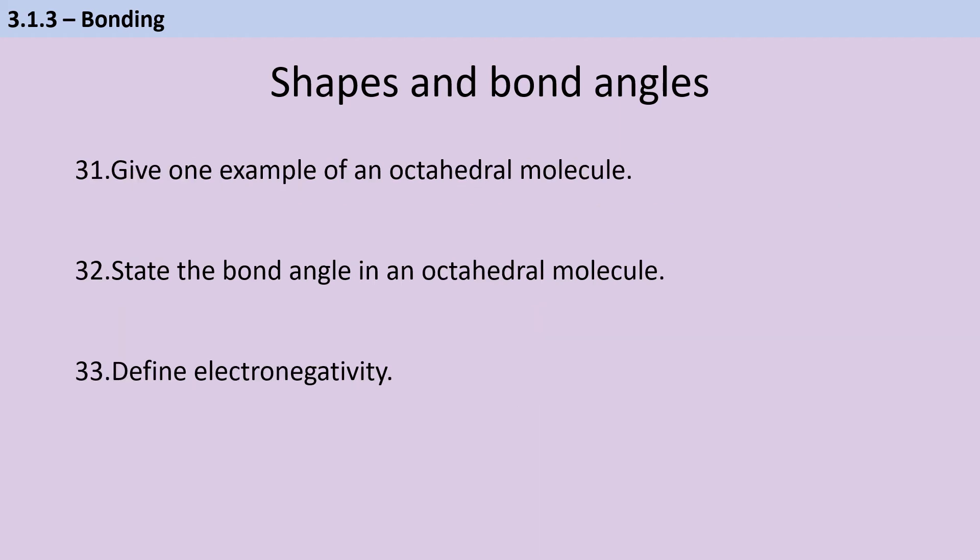There aren't a lot of examples of octahedral molecules. So the one you're going to think of is probably going to be sulfur hexafluoride. If you're at the end of the course and you're revising and you've already done the transition metal topic, then you might also think of lots of the transition metal complexes, which are often octahedral. But of course, they're not, strictly speaking, molecules. So we won't mention them here. The bond angle in an octahedral molecule will be 90 degrees.